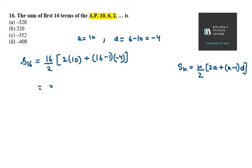You get 16 over 2 as 8. 2 into 10 is 20 plus 16 minus 1 is 15. 15 into minus 4.